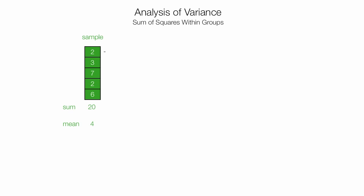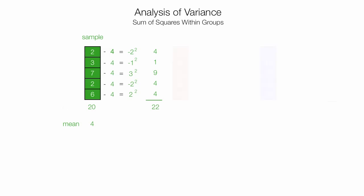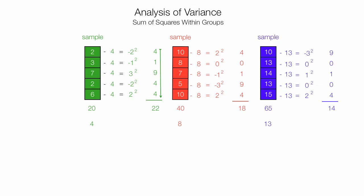Now I'm going to take the mean and subtract it from each observation. So I have 3 minus 4, 7 minus 4, and so on. So 2 minus 4 is equal to negative 2, 3 minus 4 is equal to negative 1, and so on. Now if I add these up — take the sum — it should always equal 0. Now I'm going to square each value: negative 2 squared is 4, negative 1 squared is 1, 3 squared is 9, negative 2 squared is 4, and 2 squared is 4. I'll sum all those up, and that should equal 22. And I'll do this for all the different samples or groups.